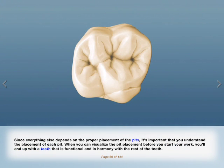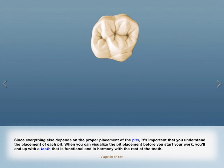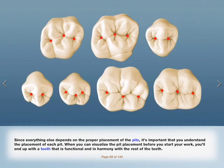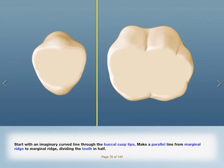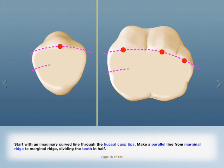Since everything else depends on the proper placement of the pits, it's important that you understand the placement of each pit. When you can visualize the pit placement before you start your work, you'll end up with a tooth that is functional and in harmony with the rest of the teeth. Start with an imaginary curved line through the buccal cusp tips, then make a parallel line from marginal ridge to marginal ridge, dividing the tooth in half.